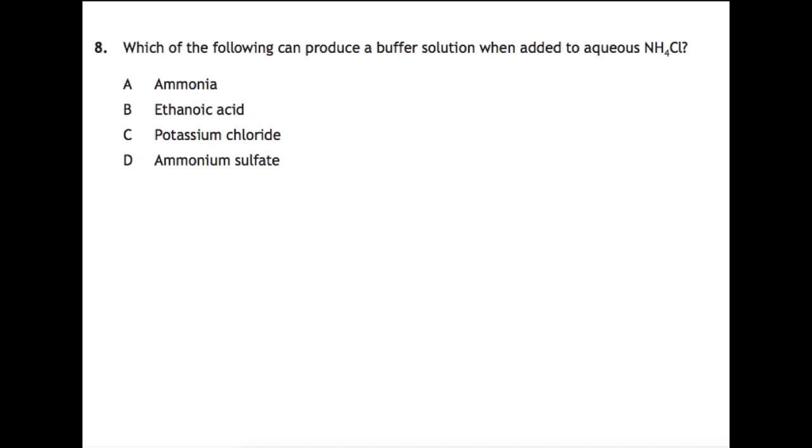Question 8: which of the following can produce a buffer solution when added to aqueous NH4Cl? This is just knowing your definition of a buffer. A buffer is always a weak acid with a salt of that acid, or a weak base with a salt of that base. Here you have ammonium chloride which is a salt based on ammonia. So to produce a buffer you would have to use ammonia for this one.